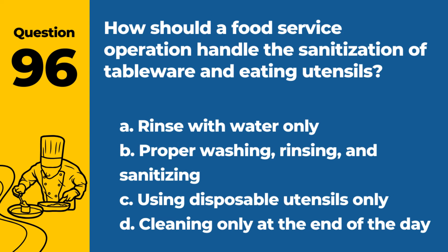Question 96. How should a food service operation handle the sanitization of tableware and eating utensils? a. Rinse with water only. b. Proper washing, rinsing, and sanitizing. c. Using disposable utensils only. d. Cleaning only at the end of the day. Answer: b. Proper washing, rinsing, and sanitizing. This ensures that utensils and tableware are safe for use.